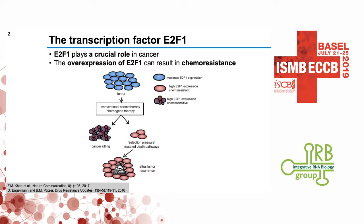Let's first talk about the E2F1 transcription factor. It's a very complex cancer gene and it has been shown to regulate cell proliferation as well as cell apoptosis. It has also been shown that overexpression of this transcription factor is related to chemotherapy resistance in cancer patients.